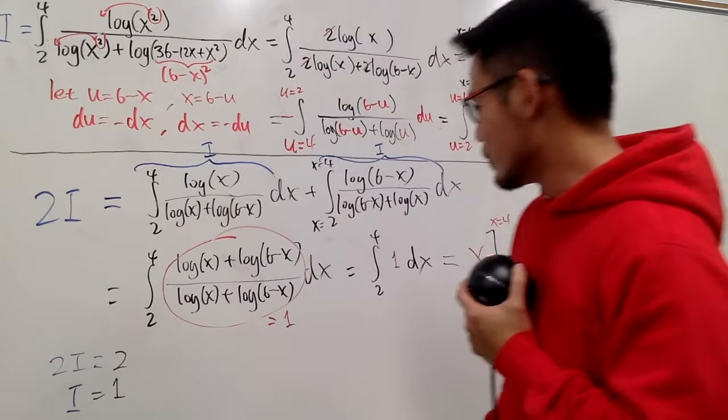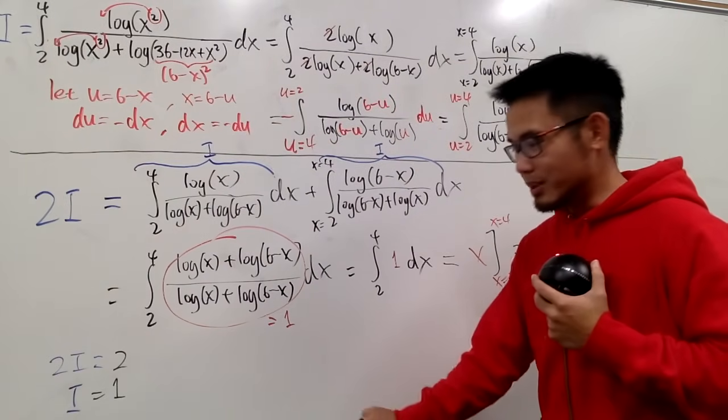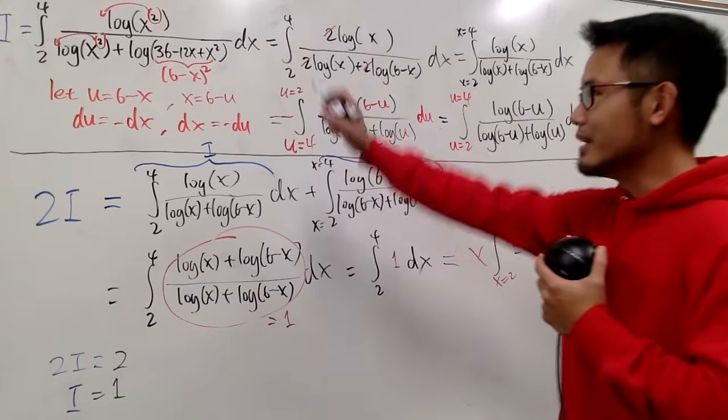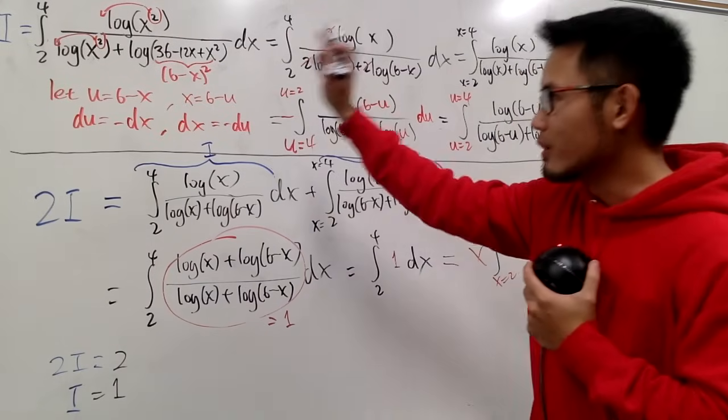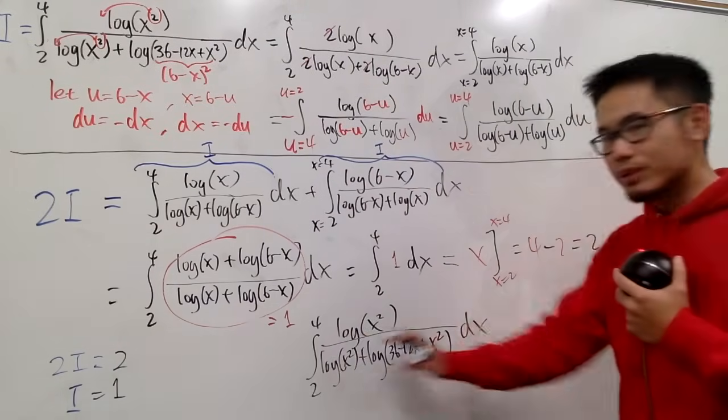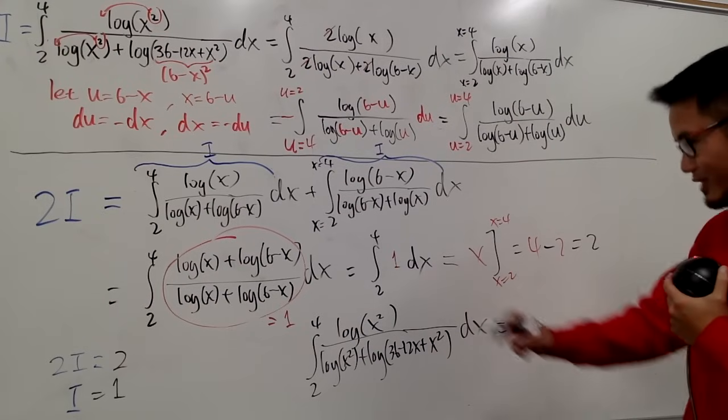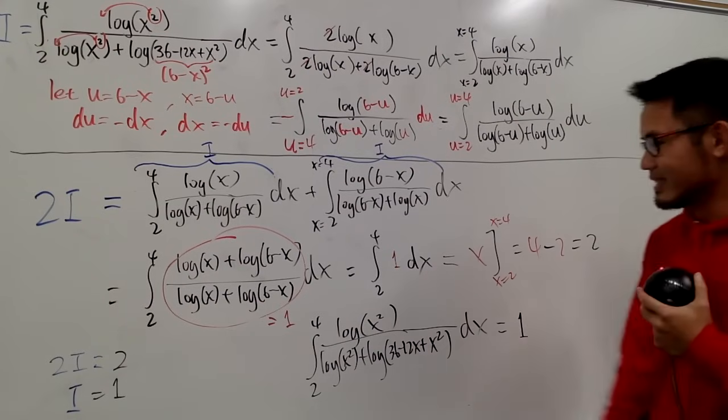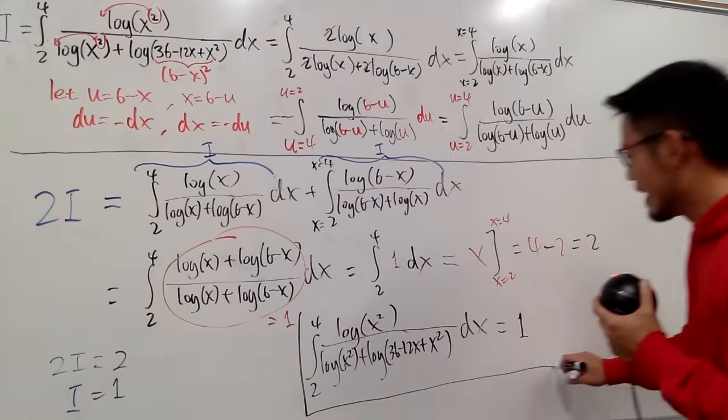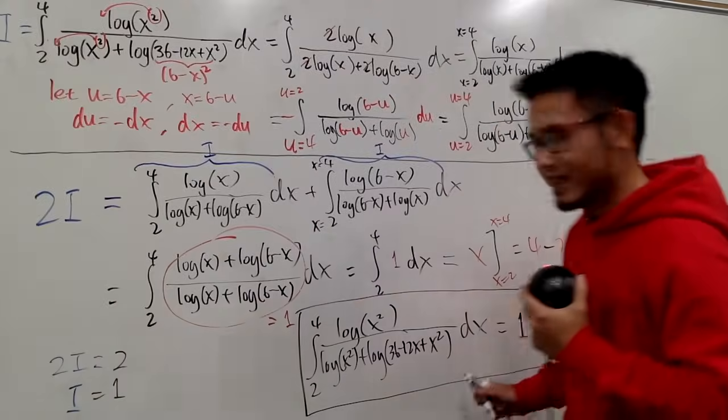So I is equal to 1. And just to be legitimate, I will write this down again. The original integral with the original look, all this, it's equal to just 1, all right? This is the 1 that we were trying to get. And that's the answer.